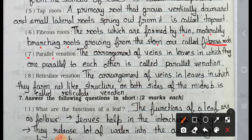Number 7 parallel venation: The arrangement of veins in leaves in which they are parallel to each other is called parallel venation. Number 8 reticulate venation: The arrangement of veins in leaves in which they form a net-like structure on both sides of the midrib is called reticulate venation.